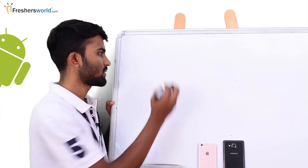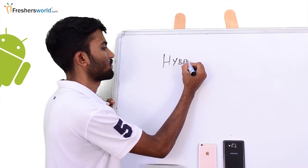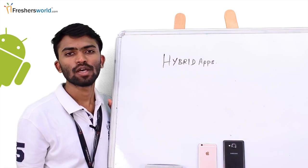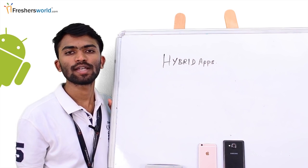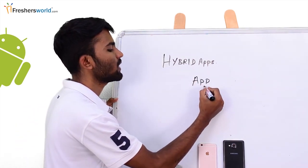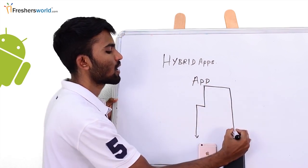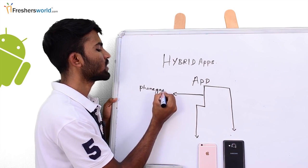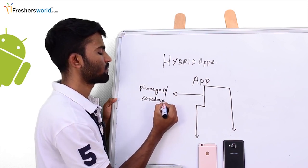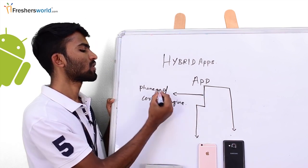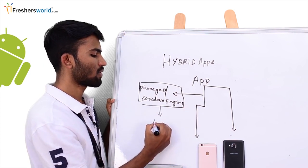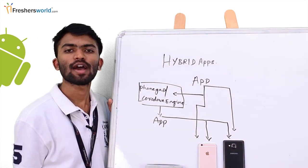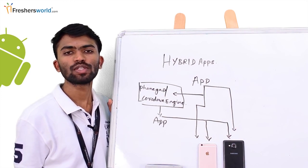Let's start with hybrid apps. Now I don't want to use my Chrome or my Safari to open apps. I just want one app to be installed both on my iOS as well as Samsung device. We can do that using PhoneGap, which is powered by Cordova Engine. Using PhoneGap and Cordova Engine, I'll be able to write an app which can be installed both on iOS as well as on Samsung. This concept is known as hybrid apps. Hybrid apps are used in order to reduce the expenses on native development.